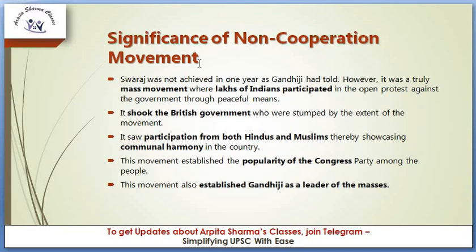What was the significance of the non-cooperation movement? Swaraj was not achieved in one year as Gandhi had promised — another 27 years passed before that. However, it was a truly mass movement where lakhs of Indians participated in open protest against the government through peaceful means. It shook the British government, who were stumped by the extent of the movement. It saw participation from both Hindus and Muslims, thereby showcasing communal harmony. The movement established the popularity of the Congress party and established Gandhiji as the leader of the masses.